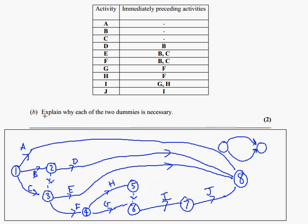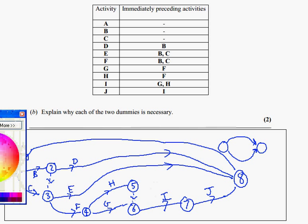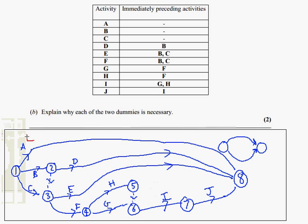Now let's look at part B. Here we have to unfortunately use a bit of English to actually explain why these dummies are necessary. So it's worth being confident about why you have to use the dummies in the first place. Now let's have a look at the first one. What we can say here is that the reason we need to use a dummy is because E depends on B and C, whilst D only depends on B. That's sufficient explanation. So we could write: E depends on B and C, whilst D depends only on B. That's a reasonable way to explain why we need that dummy there.